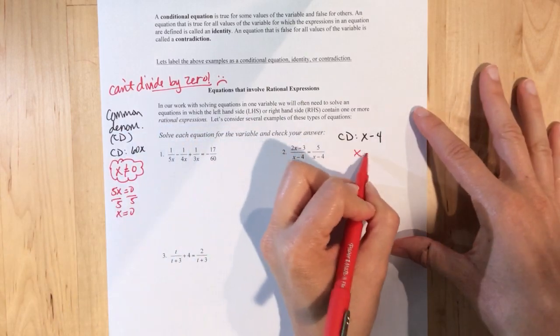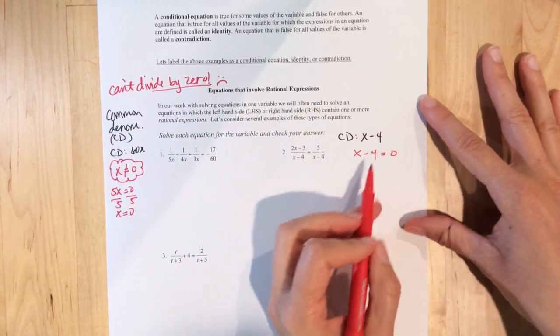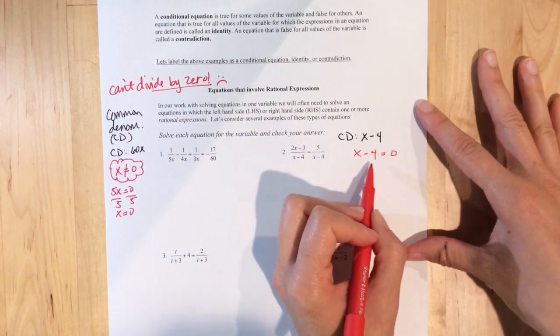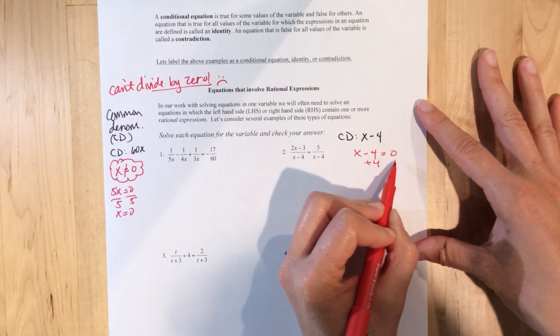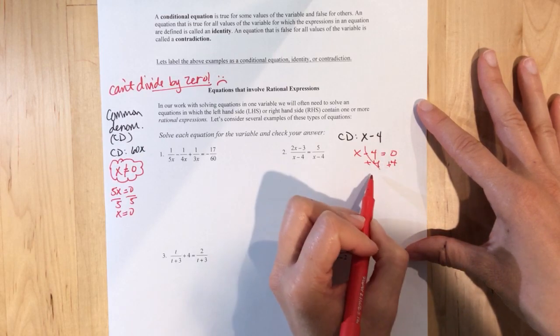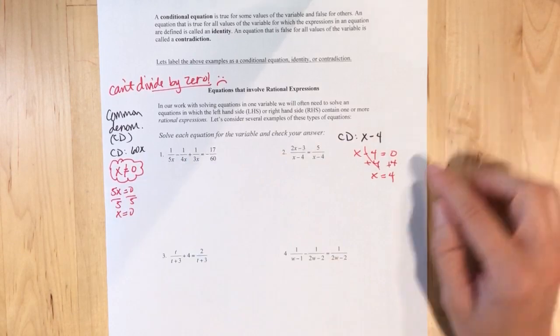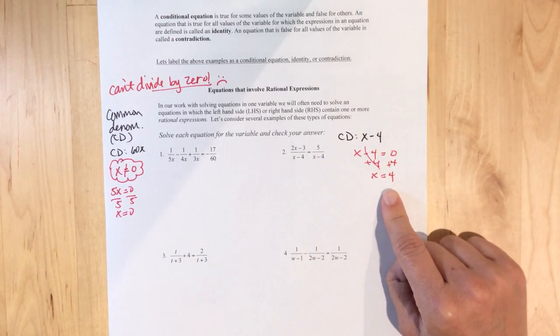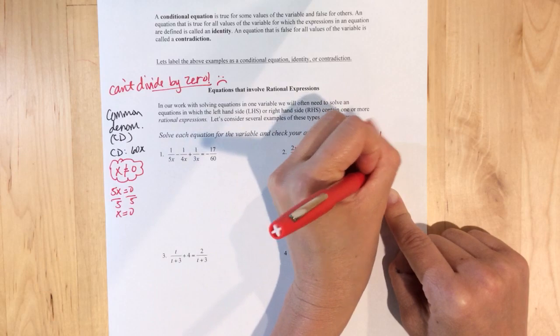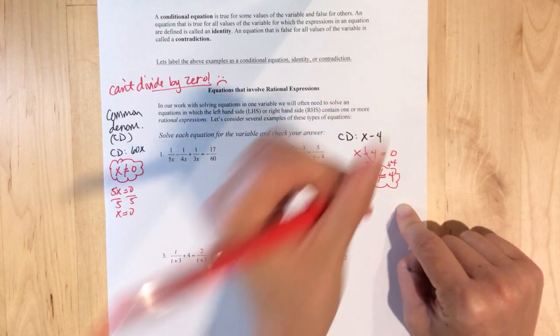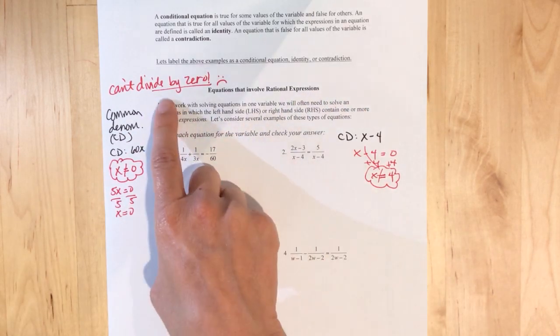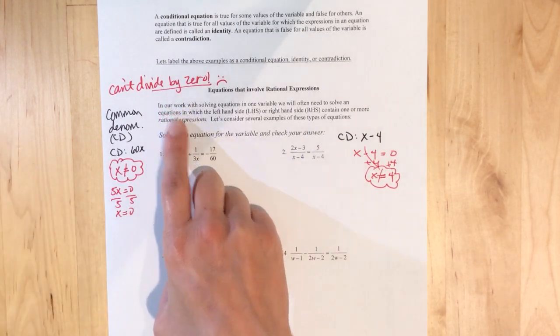Like for number two, if I take the denominator, I solve for the letter or number that would give me zero. So in this case, if X equals four, I know that's the one number I do not want because it's going to be the number that would force me to divide by zero. And that's the one thing we cannot do.